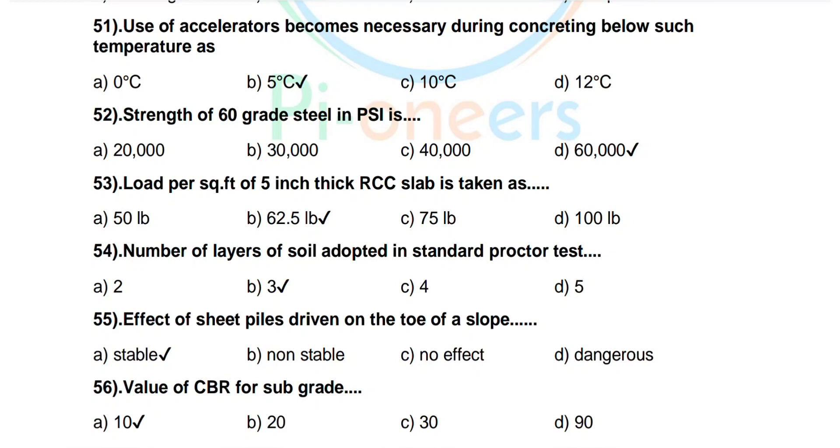Question number 55: Effect of sheet piles driven on the toe of a slope. Options are stable, non-stable, no effect, dangerous. Correct answer: stable.